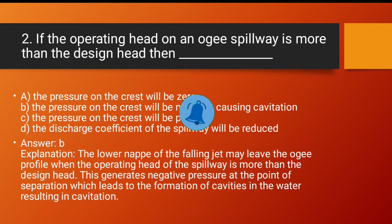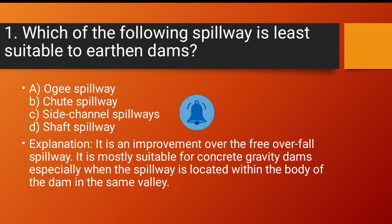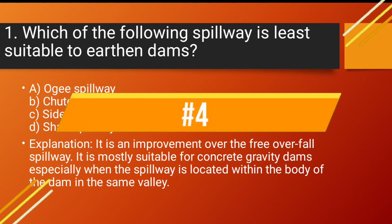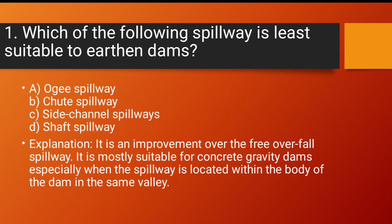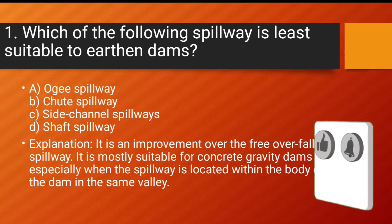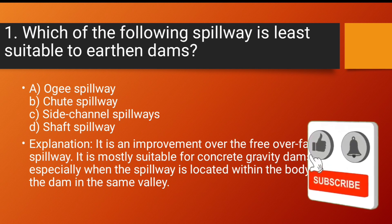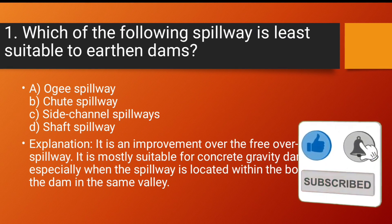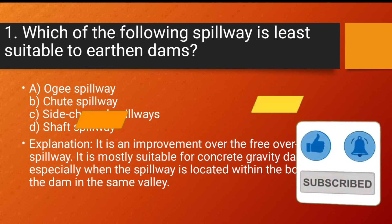Question number 1: Which of the following spillways is least suitable for earthen dams? Option A: Ogee Spillway. Option B: Chute Spillway. Option C: Side Channel Spillway.